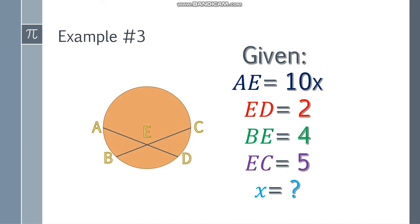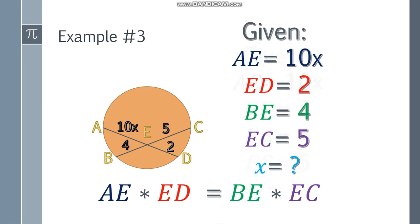Example number 3: given that AE is 10X, this is 10X. So just in case you encounter in your module or assignment one with a variable, don't panic. So AE is 10X, and ED is 2, BE is 4, and EC is 5. What we're finding is the value of X. So how do we do it? Write the formula.